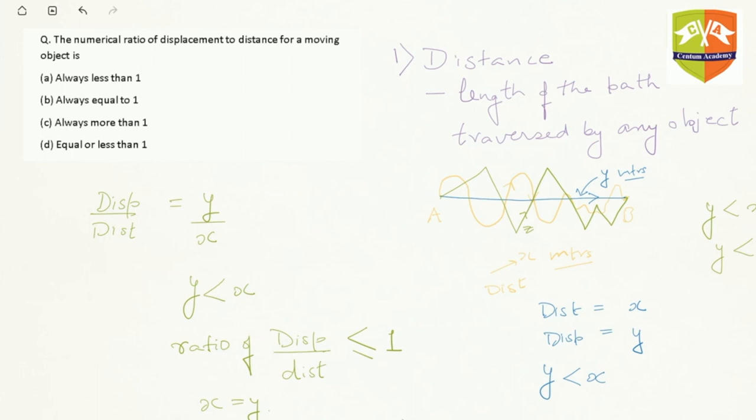What do we observe? We observe that displacement will always be less than or equal to distance. Hence, our option will be D. The numerical ratio of displacement to distance for a moving object is equal to or less than 1.